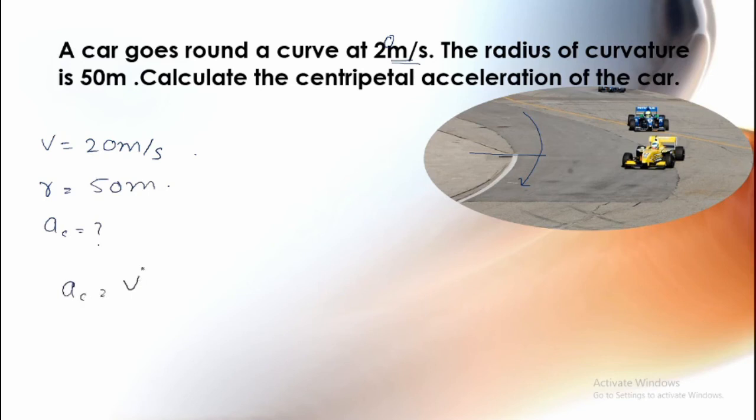Very simple. Centripetal acceleration is equal to V squared upon R. V is equal to 20. We will take this square. And R is equal to 50.